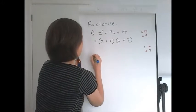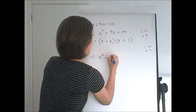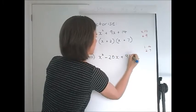Do another one. Factorise x squared take 20x plus 99.